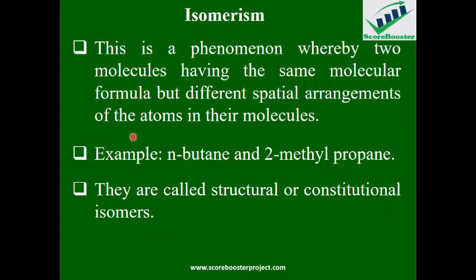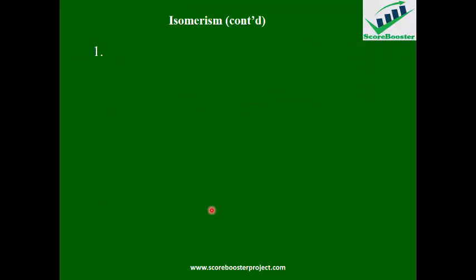Let's go to what is called isomerism. Isomerism is a phenomenon whereby two molecules have the same molecular formula but different spatial arrangements of atoms in their molecules. For example, n-butane and 2-methylpropane. They belong to the same homologous series, have the same molecular formula, but the arrangement of their atoms is different. These are called structural isomers or constitutional isomers.